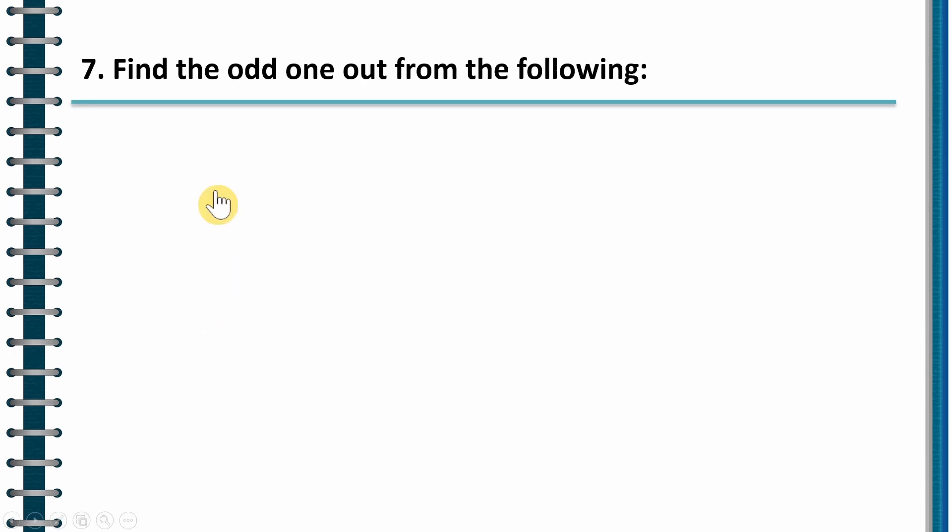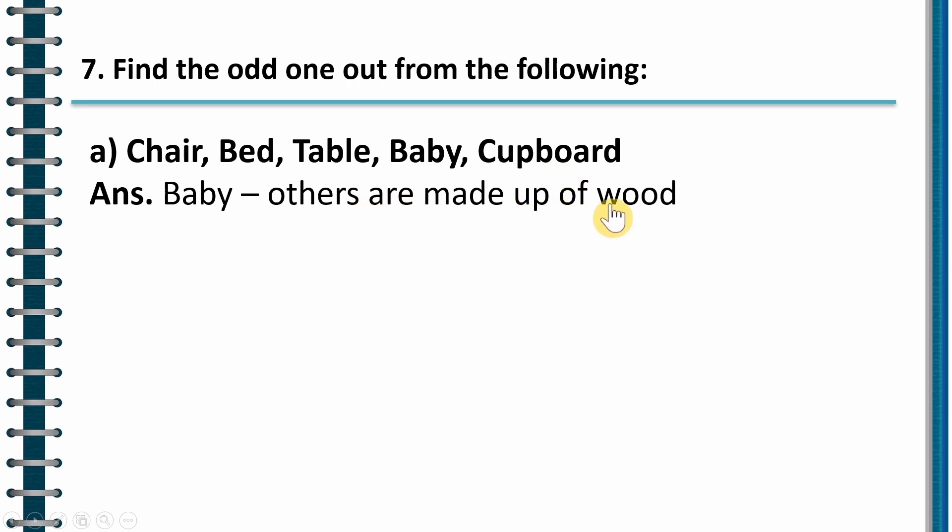Seventh question. Find the odd one out from the following. First is, chair, bed, table, baby, cupboard. The odd man out over here is baby. All other things are made out of wood.